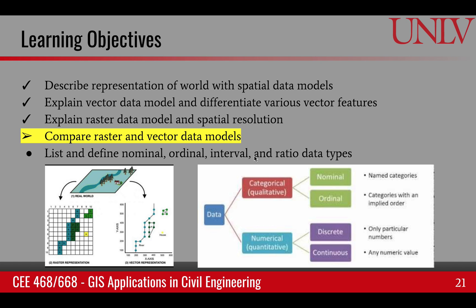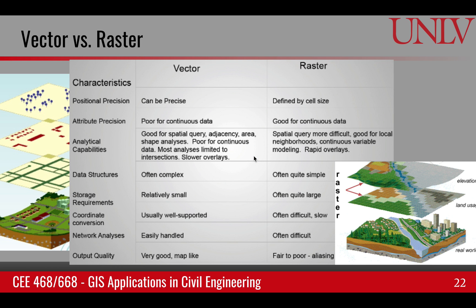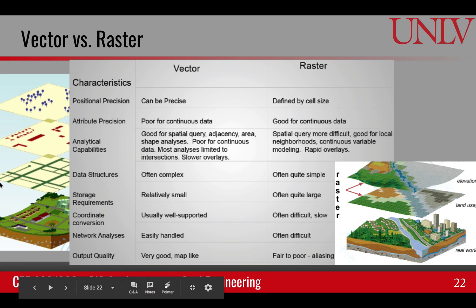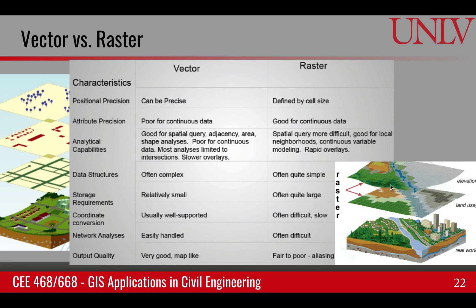In this learning objective, we will compare the raster and vector data models to see where they are useful and what are some of the disadvantages of them. This is a table from the textbook — a very nice table. It compares the two categorically, and there are pictures on the side to emphasize some of these categories.